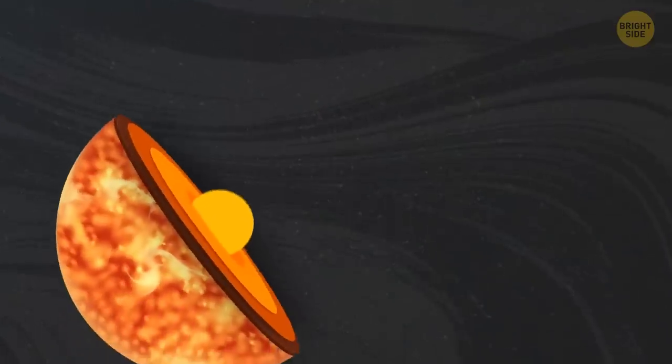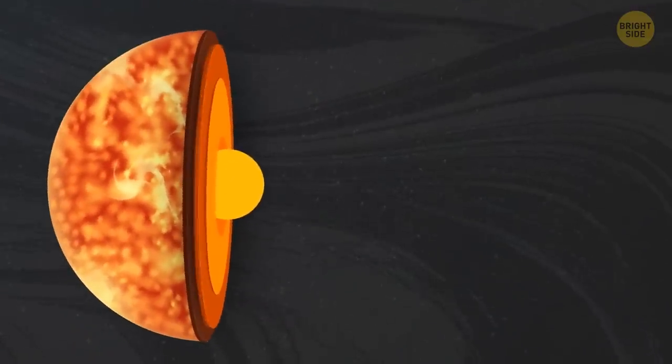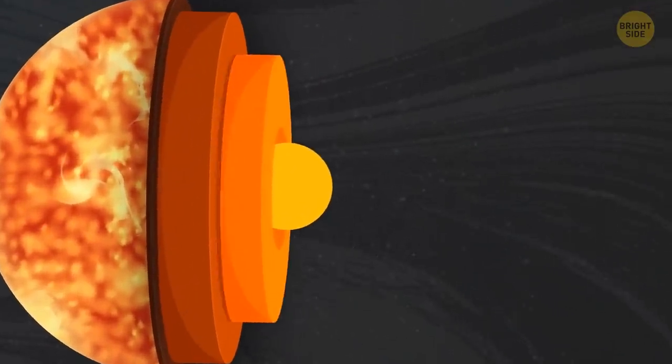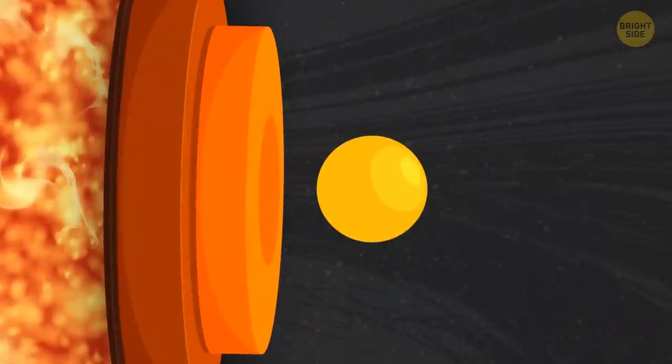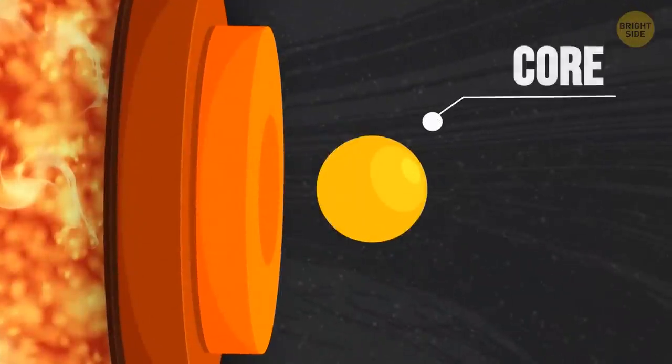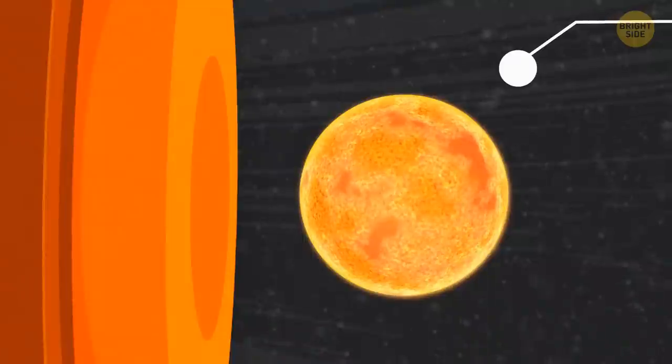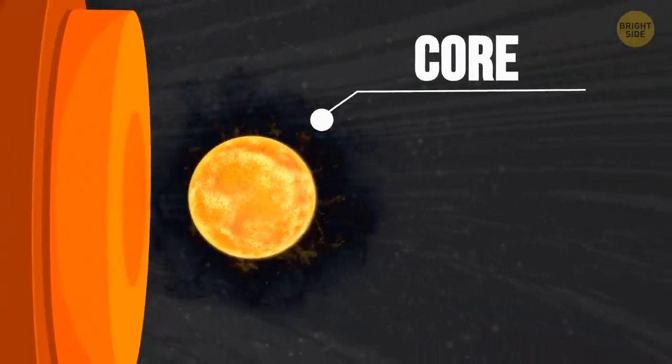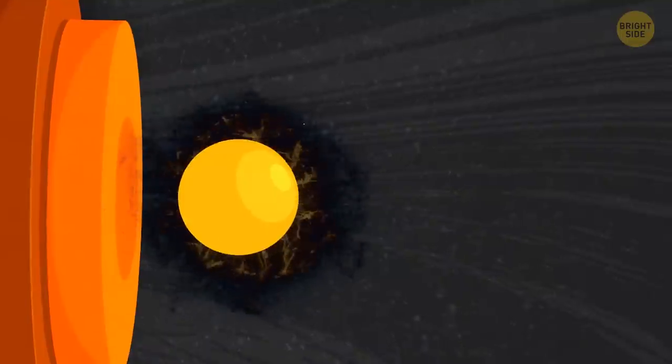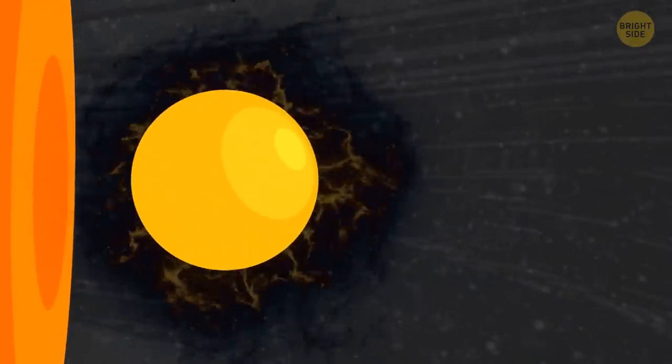Let's look at the structure of our star by cutting it in half. This is the core of the Sun. It's about a quarter of its width. The core is 150 times as dense as water. Because of the intense pressure and high temperature, nuclear reactions occur there. Hydrogen gets converted into helium, giving off an incredible amount of heat and radiation.